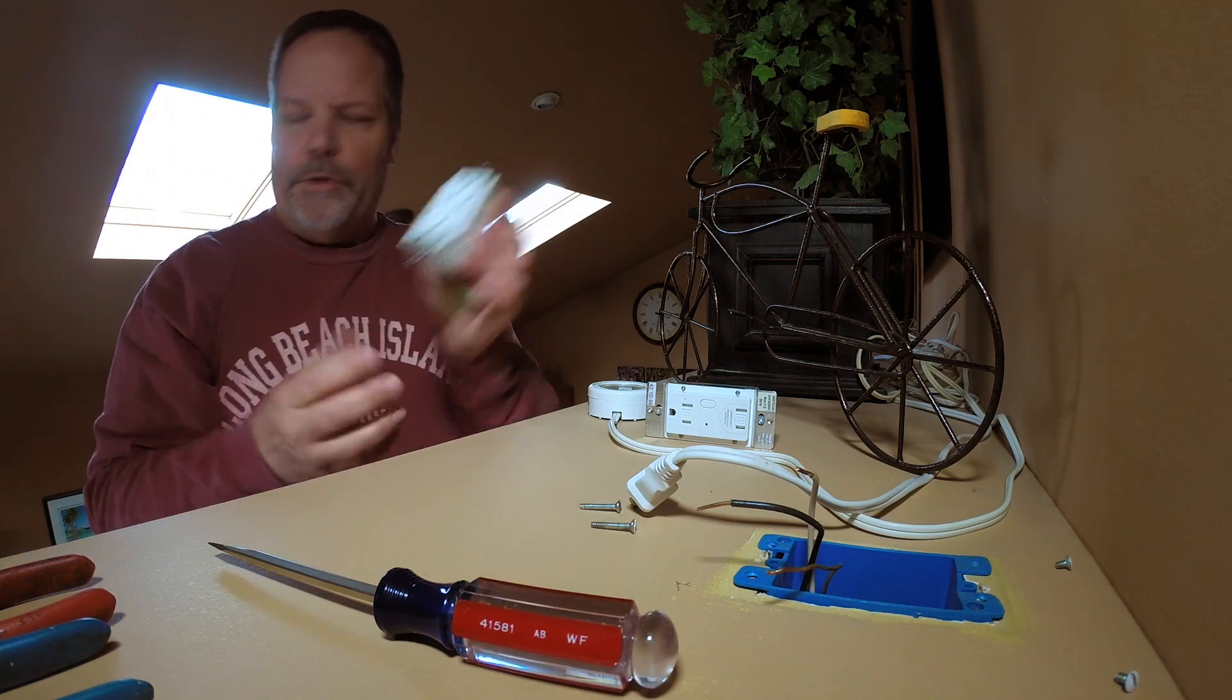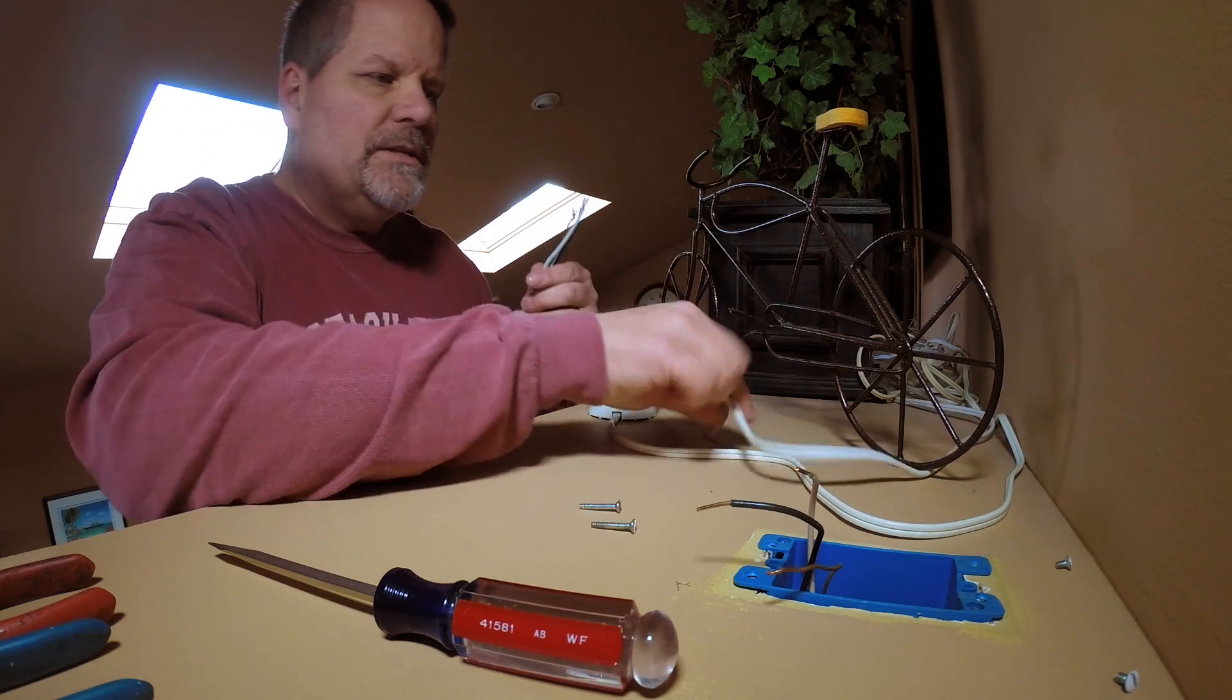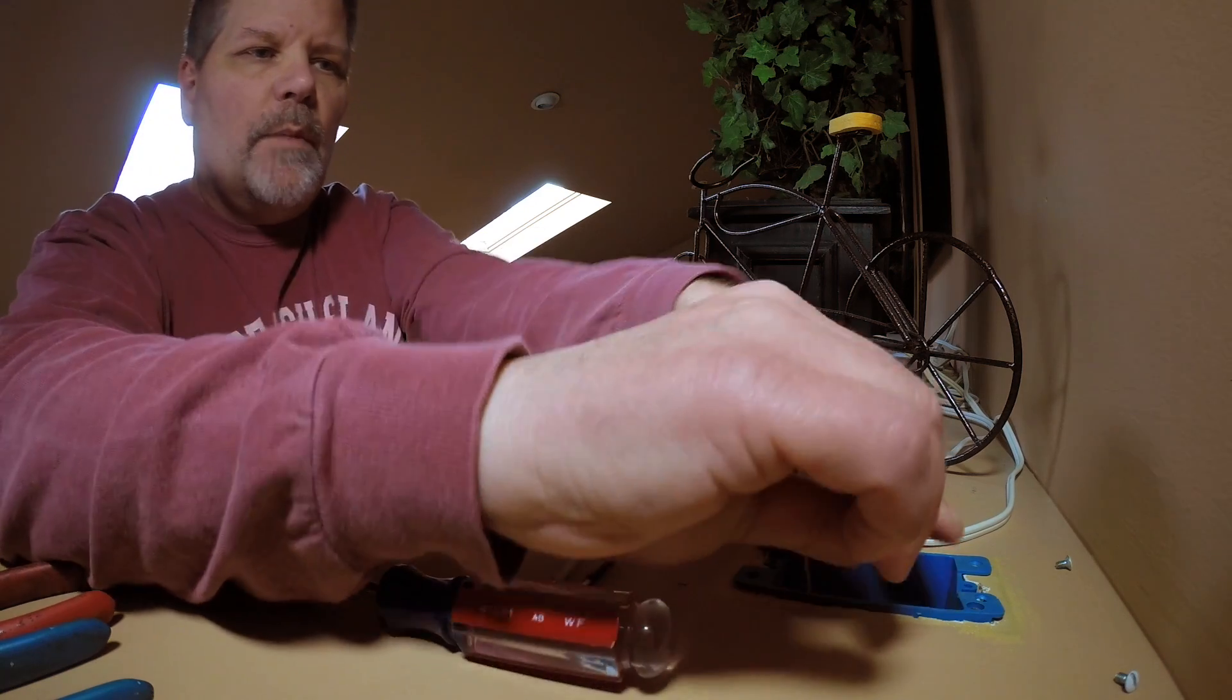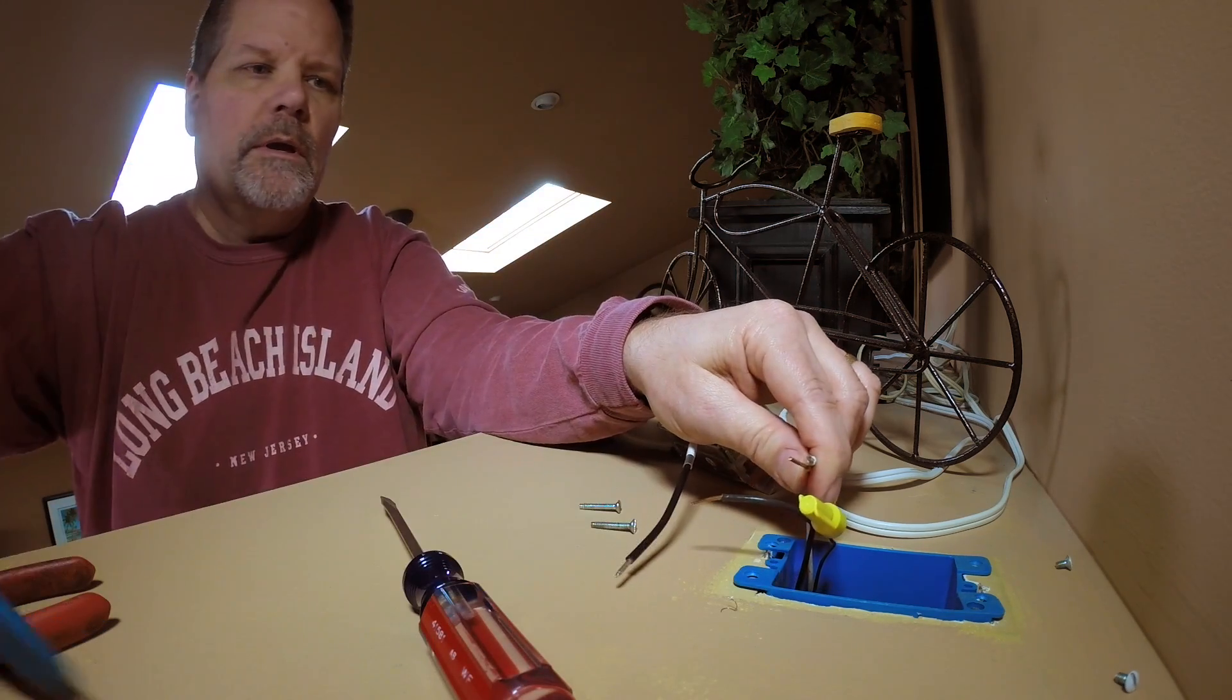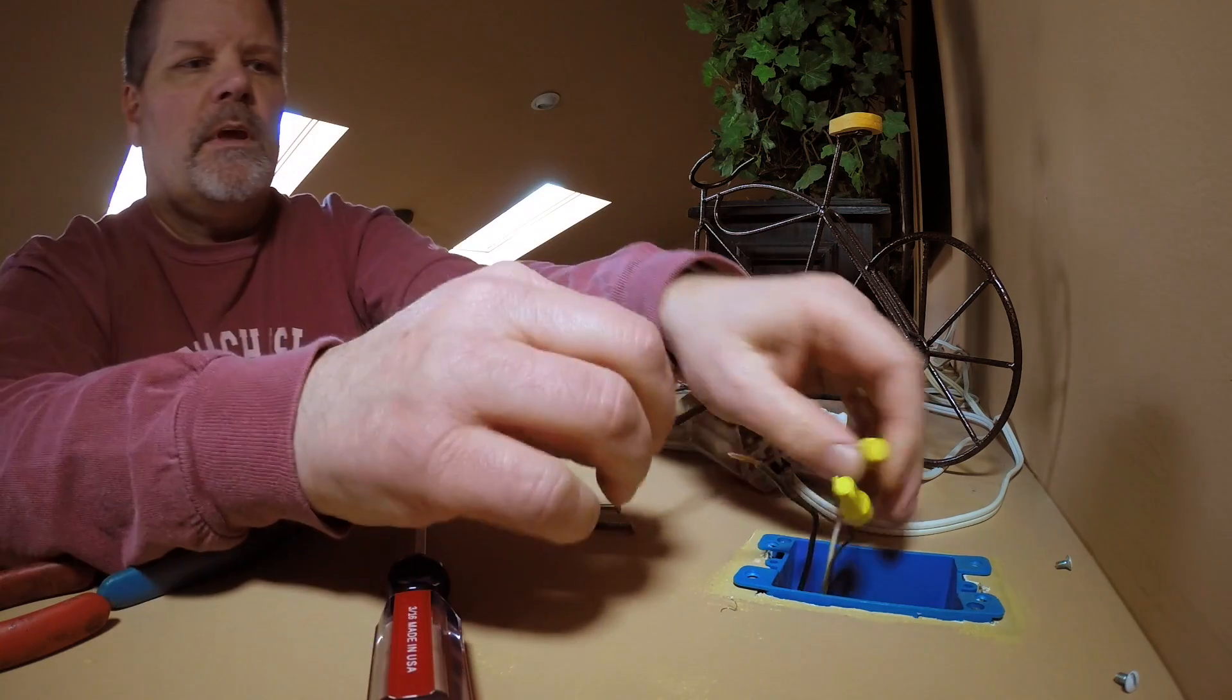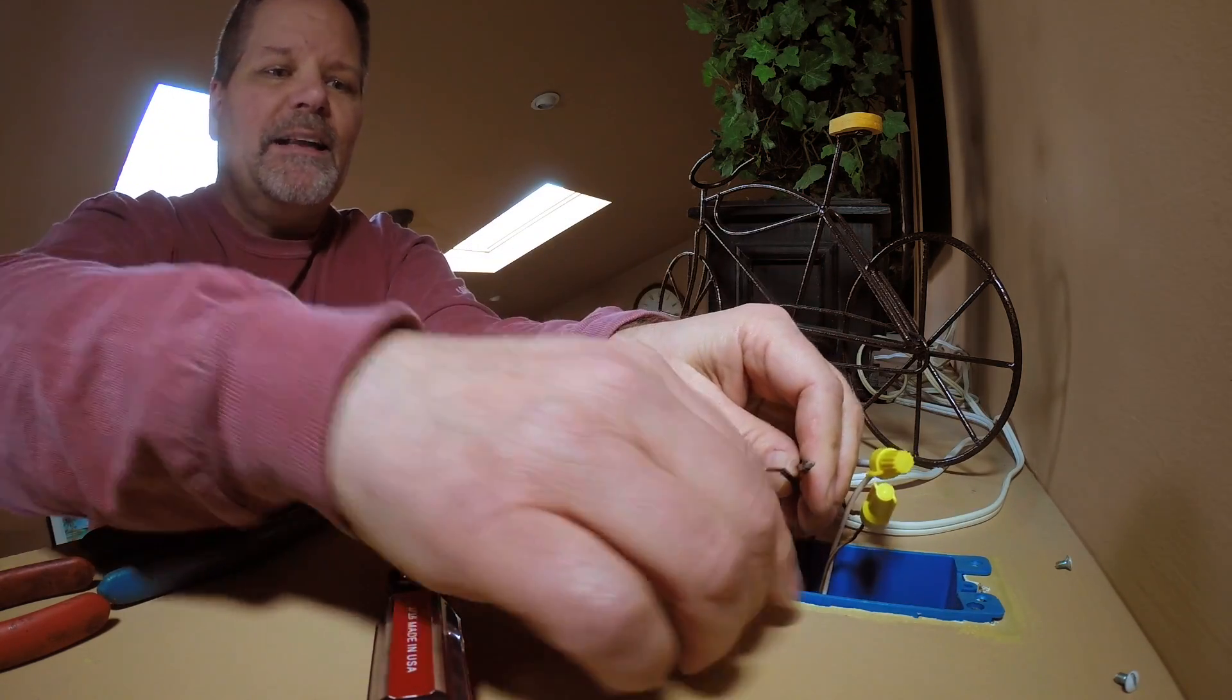Out with the old. Now these are really easy to hook up. They just have three wires. The bare copper one is the ground wire. I connect that one first. The white one is neutral. And the black one is the hot.